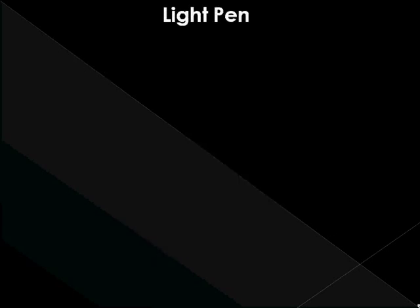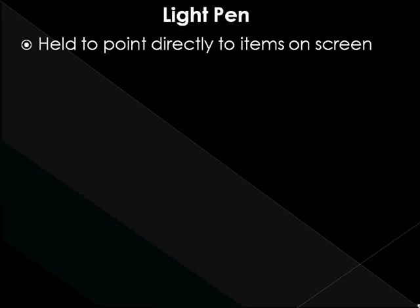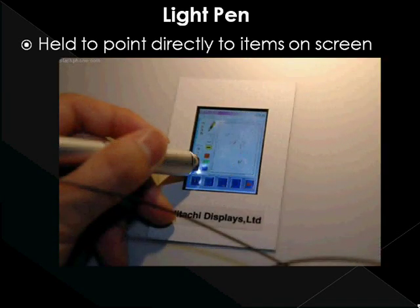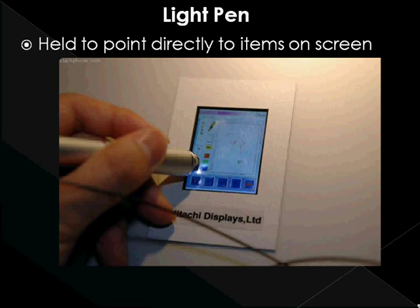Light pen. A light pen is a pointing device that is held to point directly to items on the screen. This light-sensitive pen addresses individual pixels for fine selection and drawing. It utilizes a light-sensitive detector to select objects on a display screen. A light pen is similar to a mouse, except that with a light pen you can move the pointer and select objects on the display screen by directly pointing to the objects with the pen. Hence, it is much more accurate than the touch screen. Some limitations of the fragile light pen are that it may be tiring on the arm, can cause obstruction of sight on the monitor, and varying background lighting often corrupts light pen input.